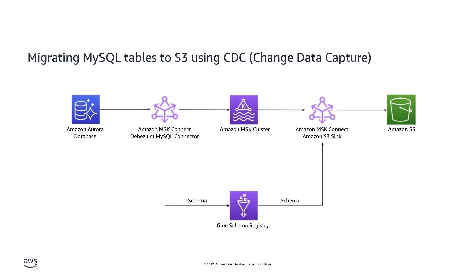To understand how to use MSK Connect, let's walk the architecture of a pipeline that streams Amazon Aurora MySQL records to Amazon S3 using CDC. Two connectors are configured and deployed for this streaming pipeline: a source connector on the Amazon Aurora database side, and a sync connector on the Amazon S3 side. On the source side, a Debezium connector converts the MySQL database transaction log into a sequence of CDC events that are streamed through the MSK cluster. The source connector also serializes the messages as JSON and stores the JSON schema into the Glue Schema Registry for schema management.